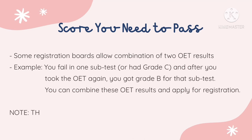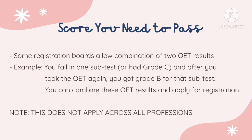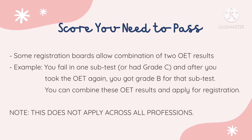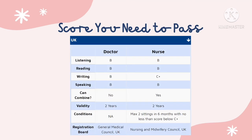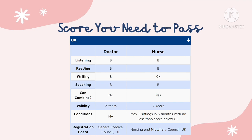This means that if you are just short in one subtest — meaning you had a grade C — you can take the OET again, and if you achieve the minimum score the second time, you can combine these two OET results and apply for registration. However, this does not apply to all professions. The General Medical Council does not allow combining OET test results. On the other hand, the NMC accepts combining two past OET results, provided that the two sittings are within six months and with no score below C+.